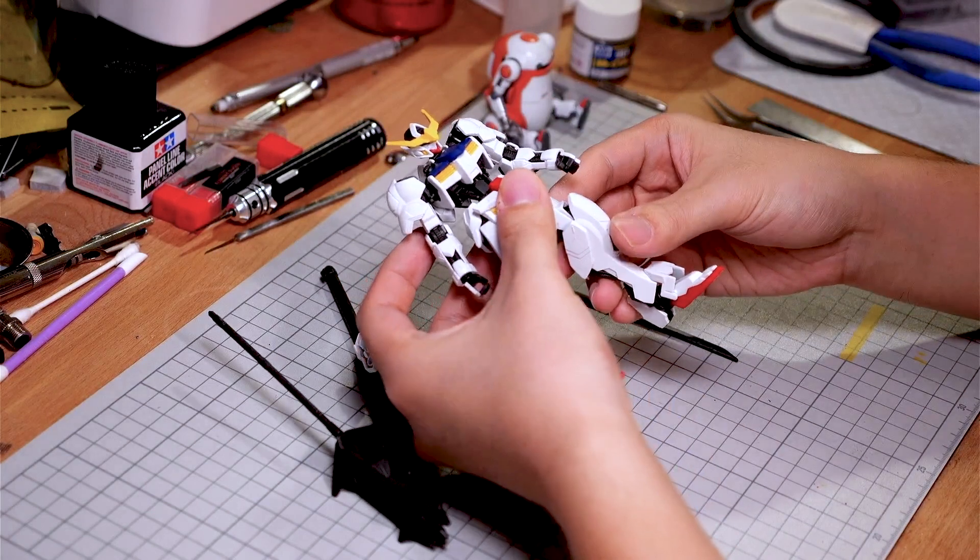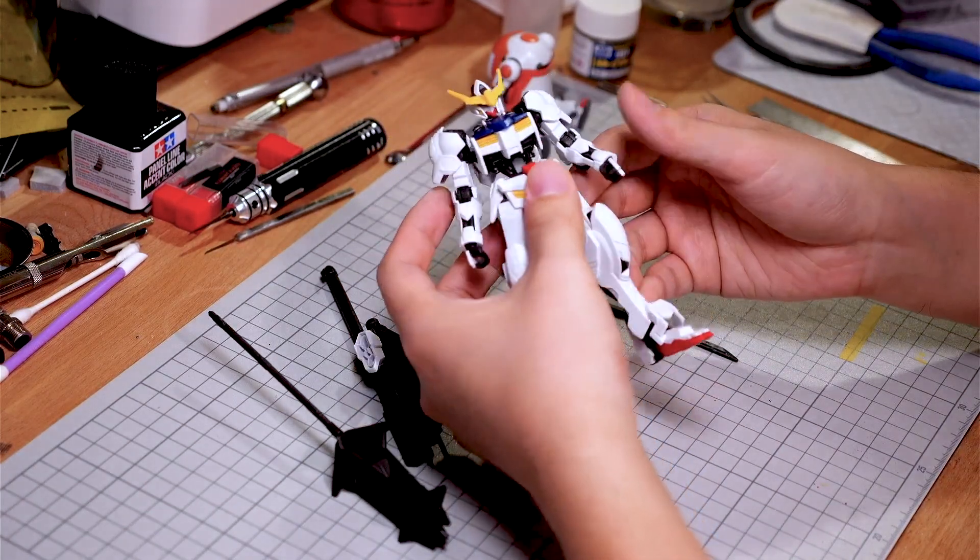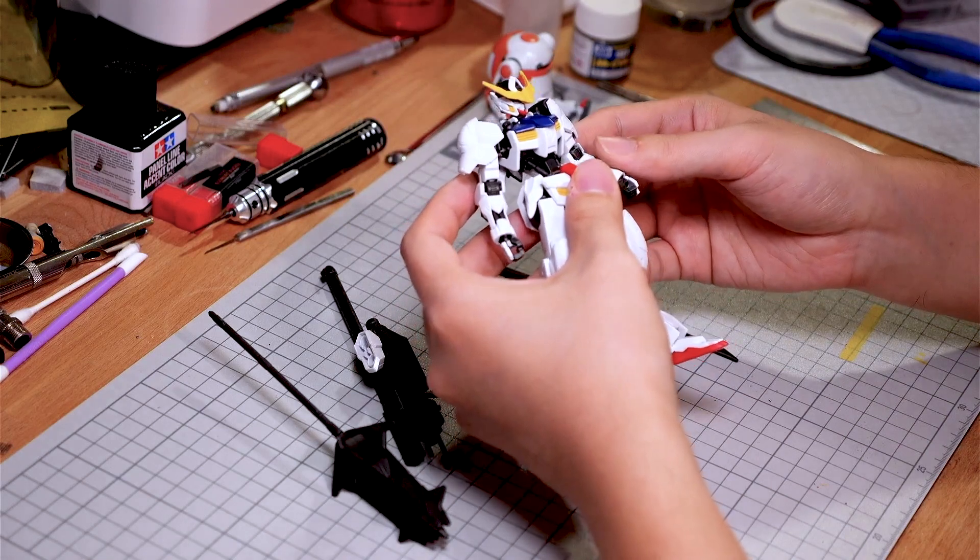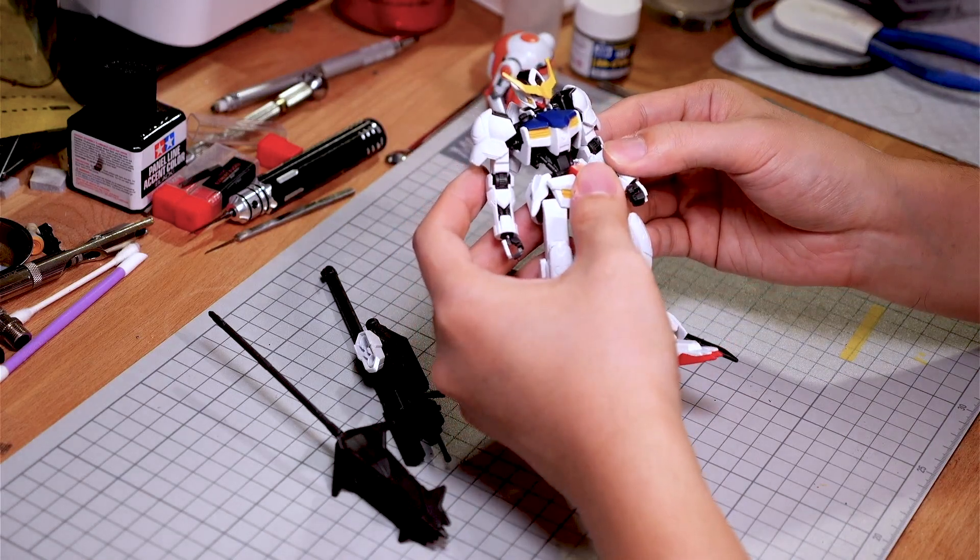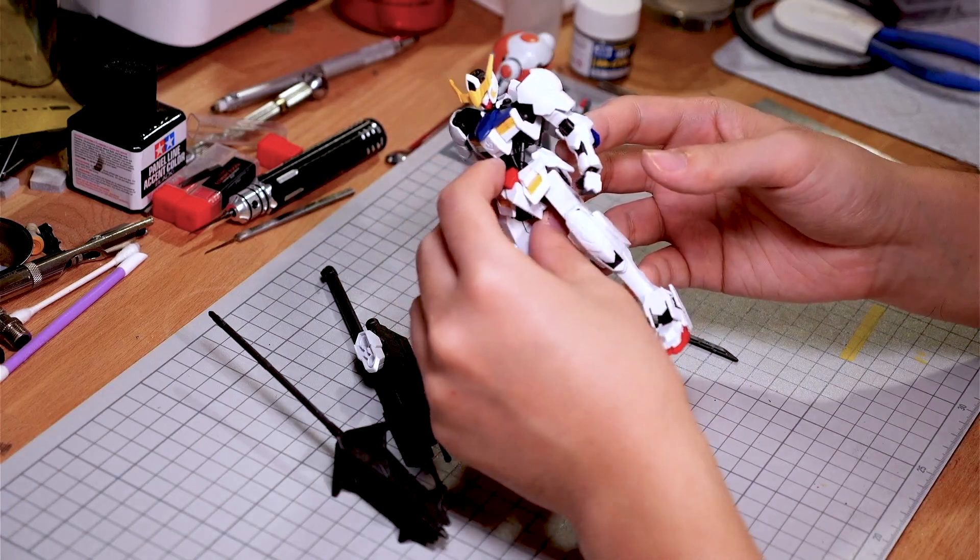When this kit first came about, it was a huge deal, a big year for high grades. For something that costs around 15 bucks, you've got amazing details, a full inner frame. Overall, bang for your buck wise, you really can't beat these IBO kits.